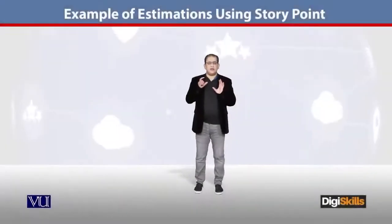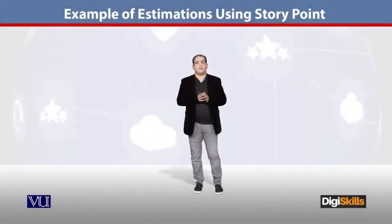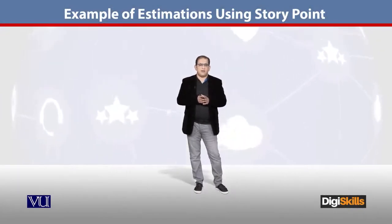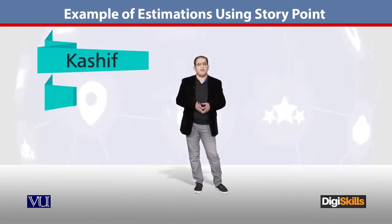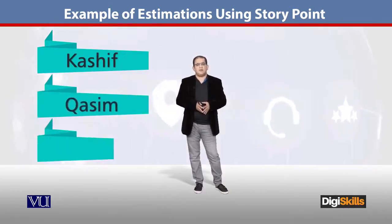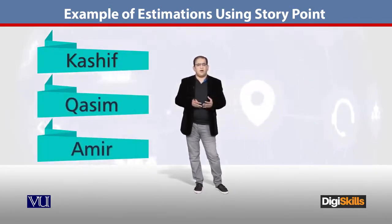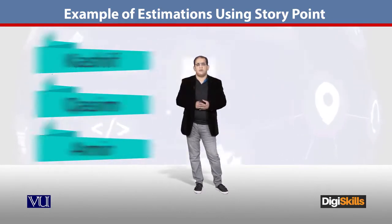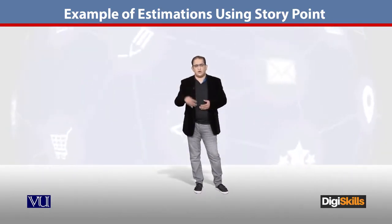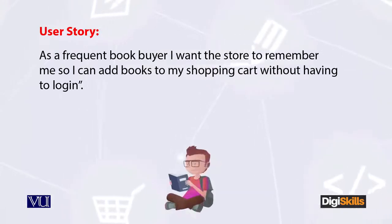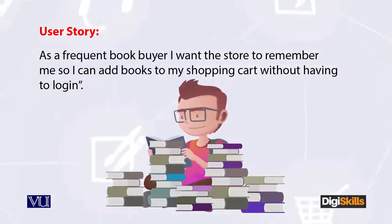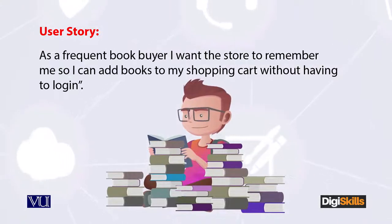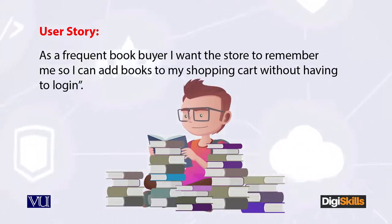Let's do a real-time example. You have a development team — one developer is Kashif, one is Kasim, your scrum master is Aamir, and you have a user story from your product owner. The user story says: as a frequent book buyer, I want the store to remember me so I can add books to my shopping cart without having to log in.